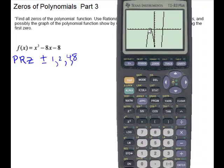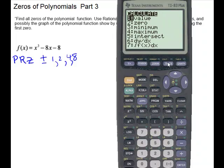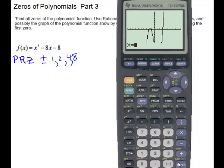And it looks like here we have a couple of zeros and one over here. I think that maybe this one is on an integer. And that would be negative 2 and that is a possibility. So let's test it. So second calc value negative 2. So that one works.